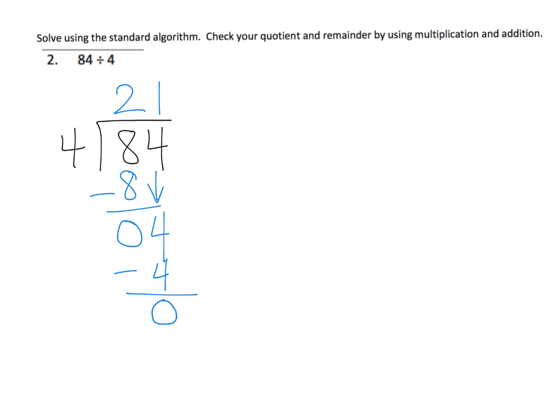So how do we check it? Well, we're going to multiply. We're going to do 21 times 4. 4 times 1 is 4. And then 4 times 2 tens is 8 tens. So because we end up with 84, and that's what we started with, we can be reasonably sure that we are correct.